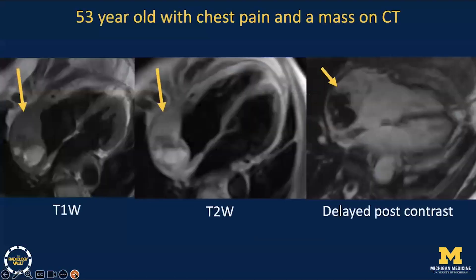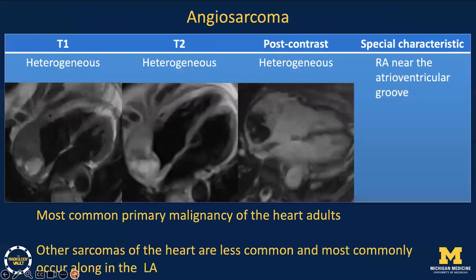Finally, this is a 53-year-old with chest pain found to have a mass on CT. Angiosarcomas are heterogeneous on T1 and T2-weighted sequences, and show heterogeneous enhancement after contrast administration. These tumors have an aggressive appearance, and most commonly occur near the right atrium at the atrioventricular groove, as we see in this case.